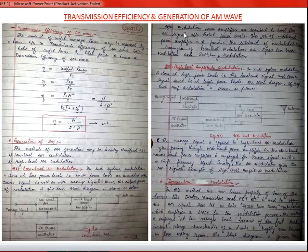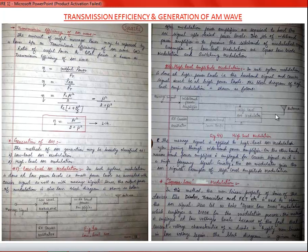Power amplifiers are required to boost the signals. In high-level amplitude modulation, modulation is done at high power levels — both the baseband signal and carrier signal must be at high power levels before modulation. The message signal is power amplified before modulation, the RF carrier is also power amplified, and then both power-amplified signals are fed to the high-level AM modulator, whose output is transmitted via antenna.